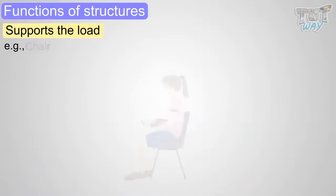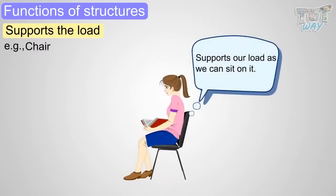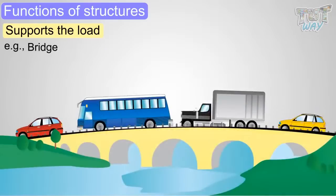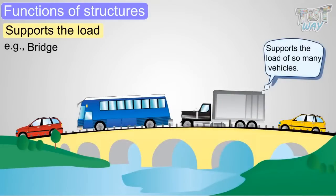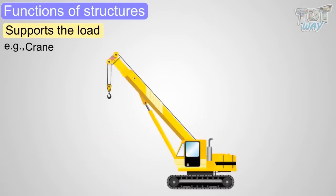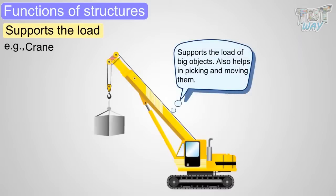Chair is a structure that supports our load as we can sit on it. Bridge is a structure that supports load of so many vehicles. Crane is a structure that supports the load of big objects to pick them up and also move them.